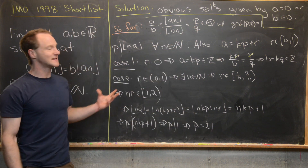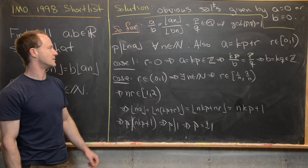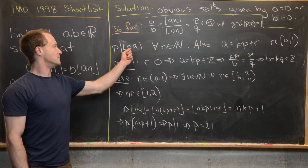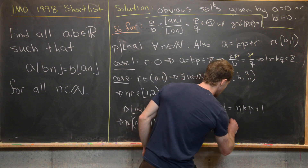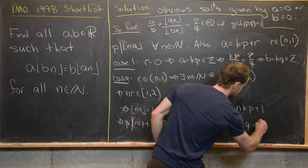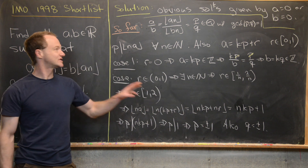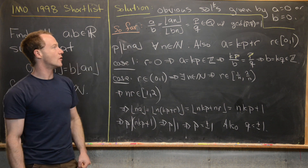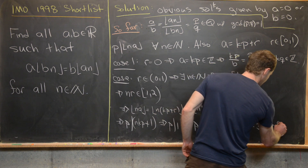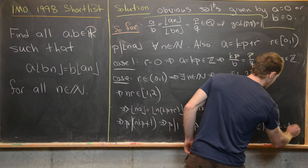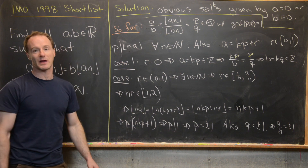The same argument applied to B and Q shows that Q also equals plus or minus 1. Therefore A over B equals P over Q equals plus or minus 1.